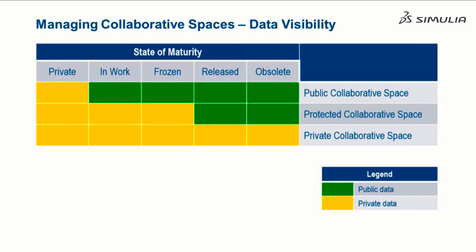The visibility of data within collaborative spaces is controlled by the state of maturity for an object. As the maturity state progresses, visibility increases. The exception is in a private collaborative space, where the data is always private.